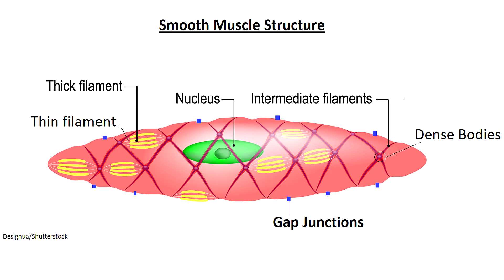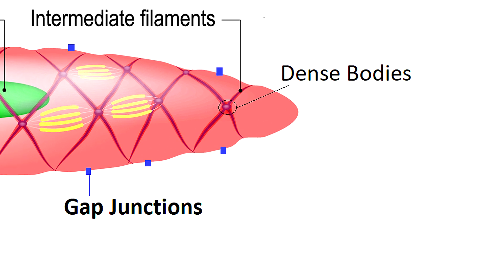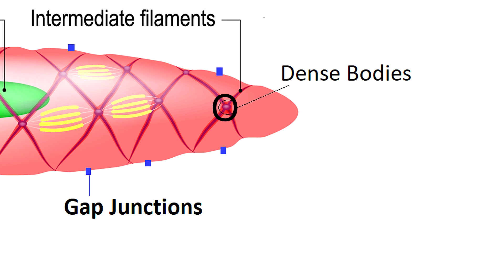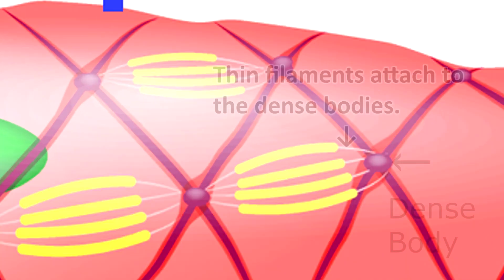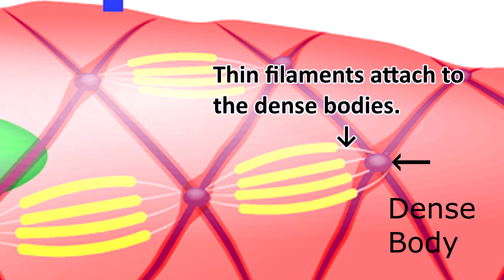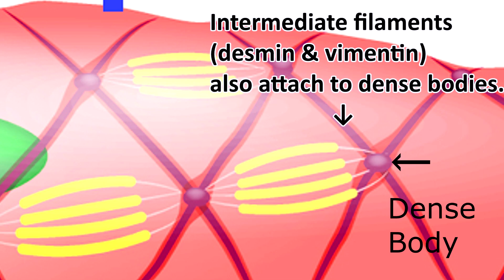As you look at this illustration of a smooth muscle fiber, you'll notice the single nucleus in the center and a net-like structure running throughout the fiber. The little dots on this net structure are called dense bodies. The dense bodies attach to the sarcolemma — the smooth muscle cell's outer sheath — and they work much like the Z-discs in the sarcomere, allowing the thin filaments to attach to them. Dense bodies also allow for the attachment of intermediate filaments such as desmin and vimentin, which run throughout the cell in a networked fashion, adding both strength and stability.